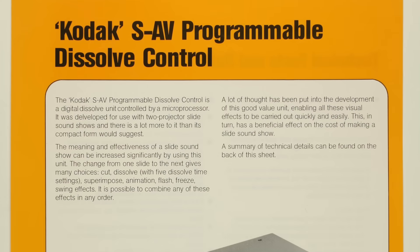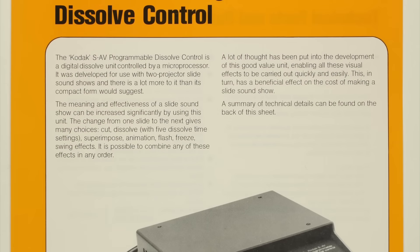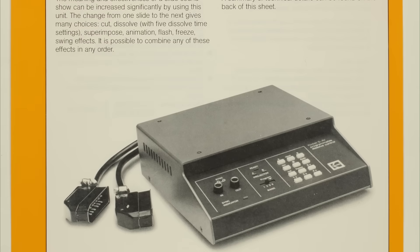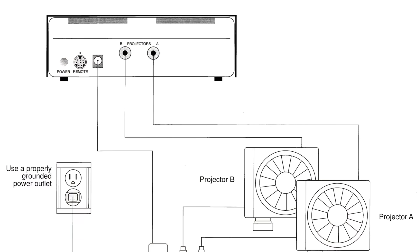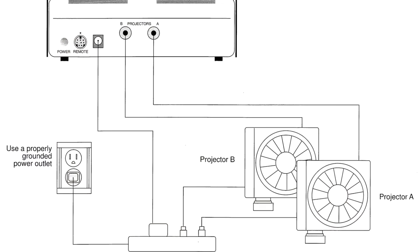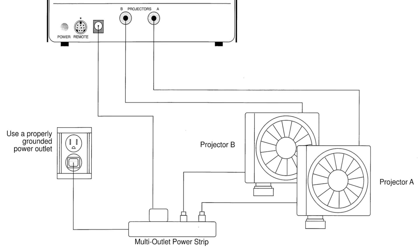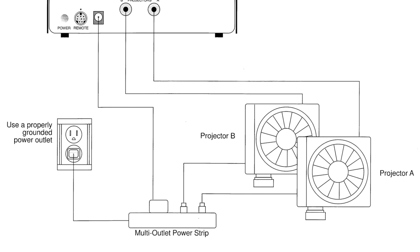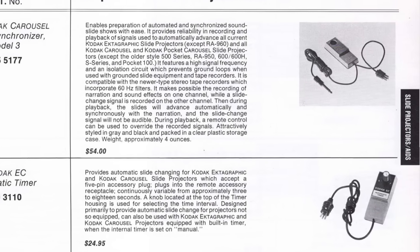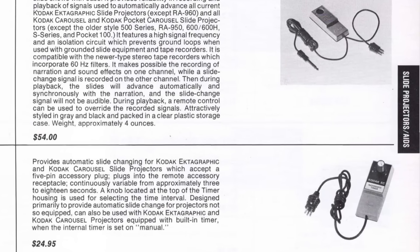According to the manual, the sound synchronizer could be used with something called a dissolve control. As the name suggests, this allowed you to smoothly dissolve between two slides rather than abruptly changing, though it required the use of two separate projectors — dimming down the lamp on one while dimming up the other to achieve a dissolve lasting anywhere from instantaneously to five seconds. There was also something called the EC automatic timer, which allowed you to set your slides to sequence at a fixed interval. Both of those sound like really neat products, and if I ever come across examples of either, I will definitely feature them on the channel.